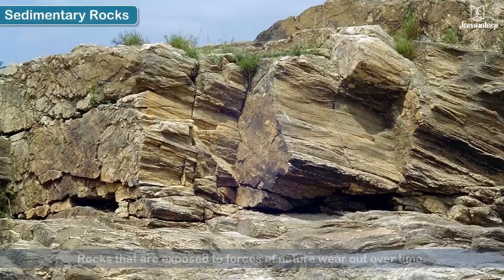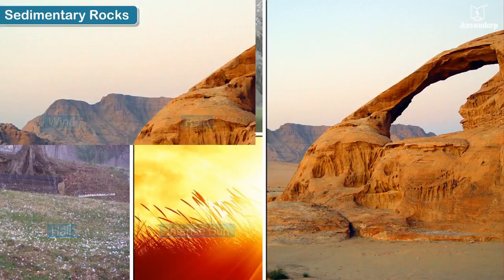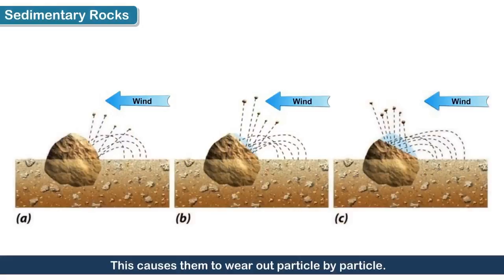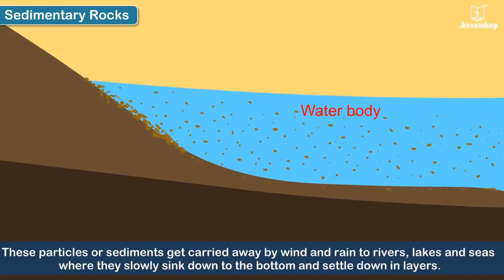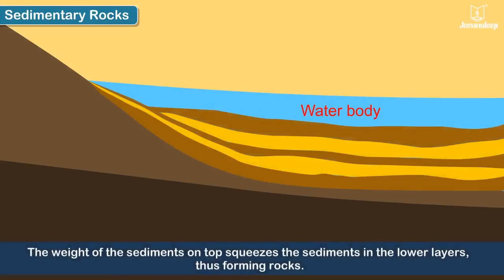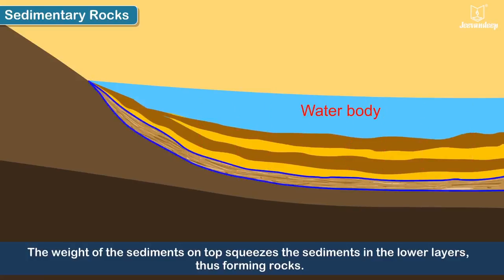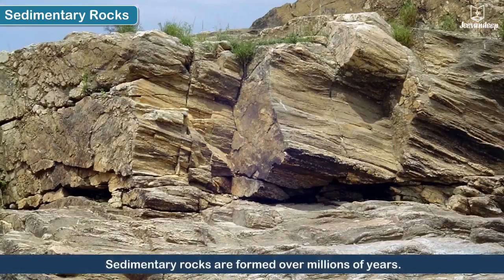Sedimentary rocks: rocks that are exposed to forces of nature such as wind, rain, hail, and intense heat of the sun wear out over time. This process is called weathering of rocks. This causes them to wear out particle by particle. These particles or sediments get carried away by wind and rain to rivers, lakes, and seas, where they slowly sink down to the bottom and settle in layers. The weight of the sediments on top squeezes the sediments in the lower layers, thus forming rocks called sedimentary rocks. Sedimentary rocks are formed over millions of years.